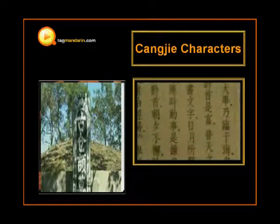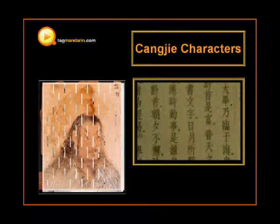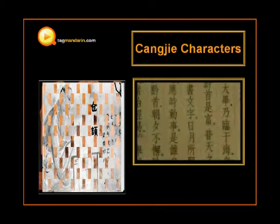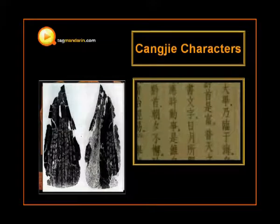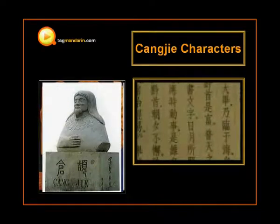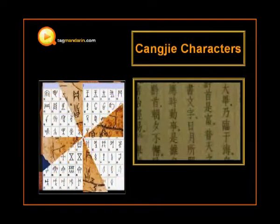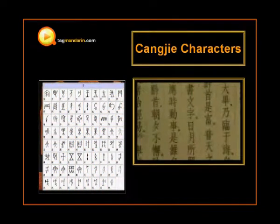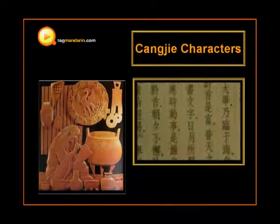Legend has it that he had four eyes and eight pupils, and that when he invented the characters, the deities and the ghosts cried and the sky rained millet. He is considered a legendary figure rather than a historical figure, or at least not considered to be the sole inventor of Chinese characters. The Cang Jie method, a Chinese character input method, is named after him. For more information about this legendary figure, you can search Cang Jie on Wikipedia.